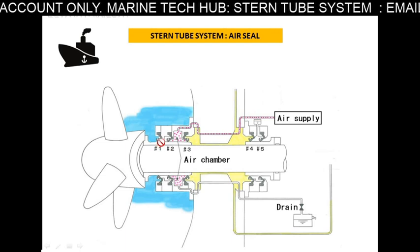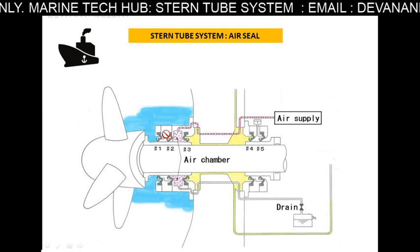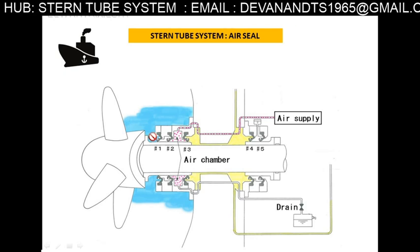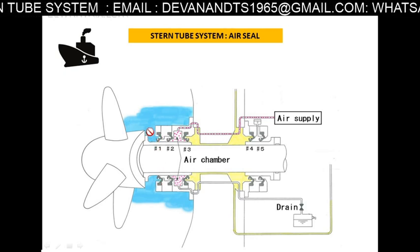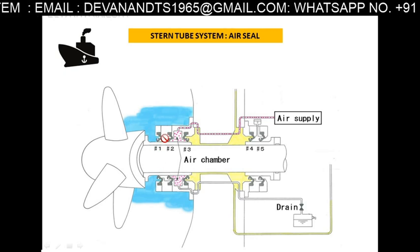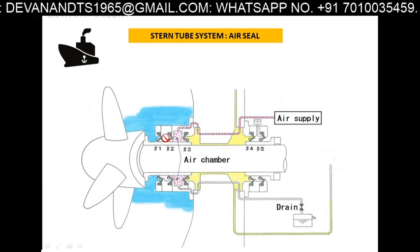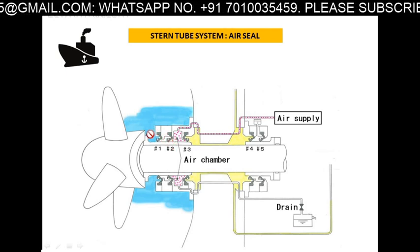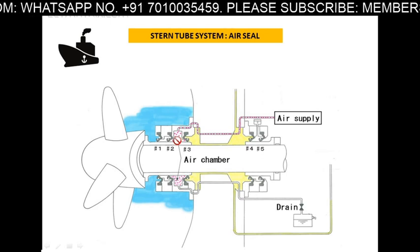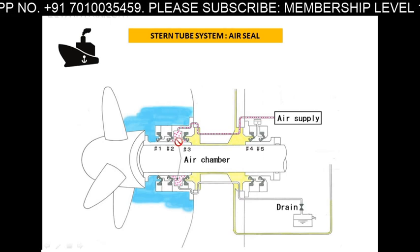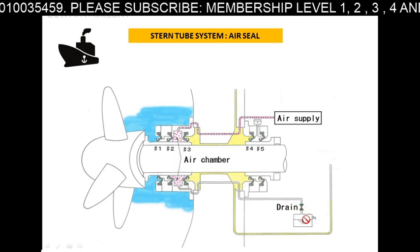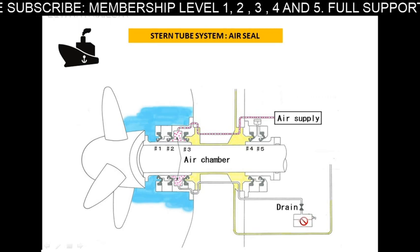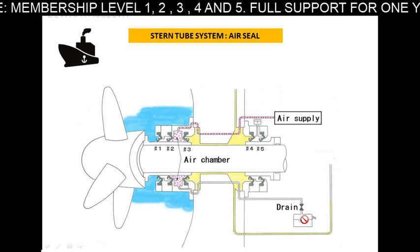The sealing rings have a specific shape. If the first sealing ring breaks, sea water will come up to that point but still be held. If the second sealing ring breaks, sea water can come further in. This is detected by daily observation of the drain tank.